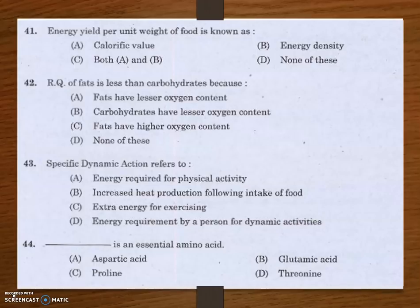Next question: RQ of fats is less than carbohydrates because — options are fats have lesser oxygen content, carbohydrates have lesser oxygen content, fats have higher oxygen content, and none of these. The answer is fats have lesser oxygen content. RQ is the respiratory quotient — the ratio of volume of CO₂ released to the volume of O₂ taken in during respiration.